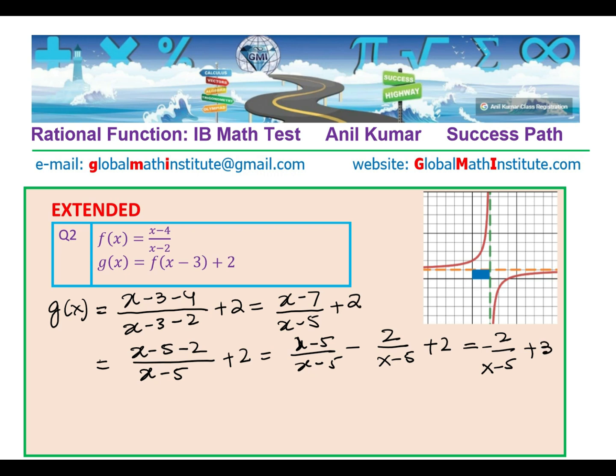So that is g(x) for you. So g(x) is -2/(x-5) + 3. And clearly, from here, what is going to be the vertical asymptote? Vertical asymptote is x = 5. And the horizontal asymptote is y = 3. So you have this coordinate point, which is (5, 3).